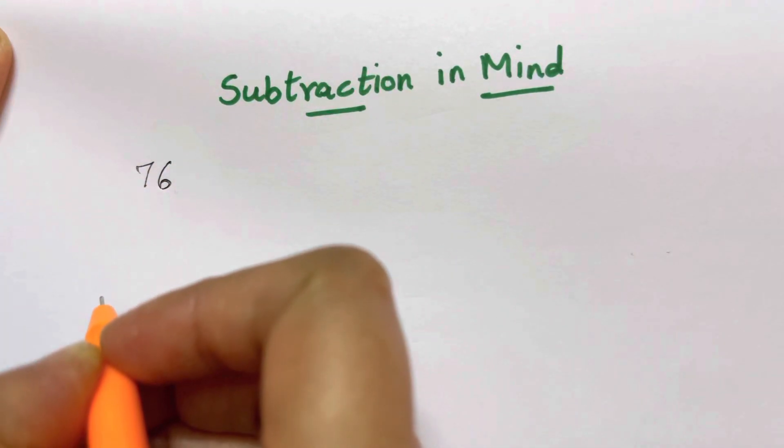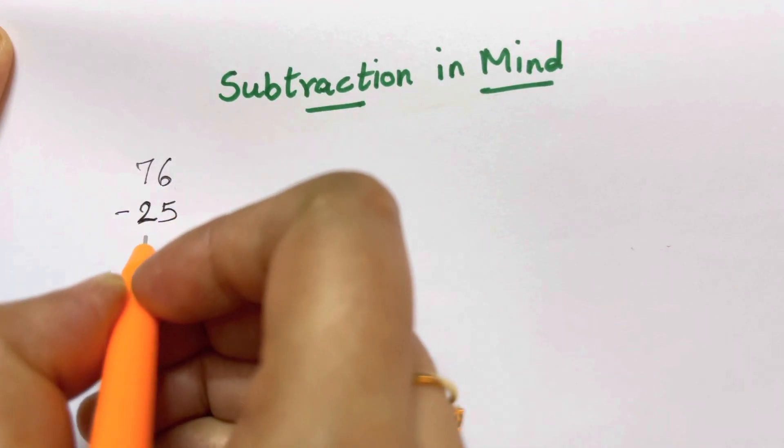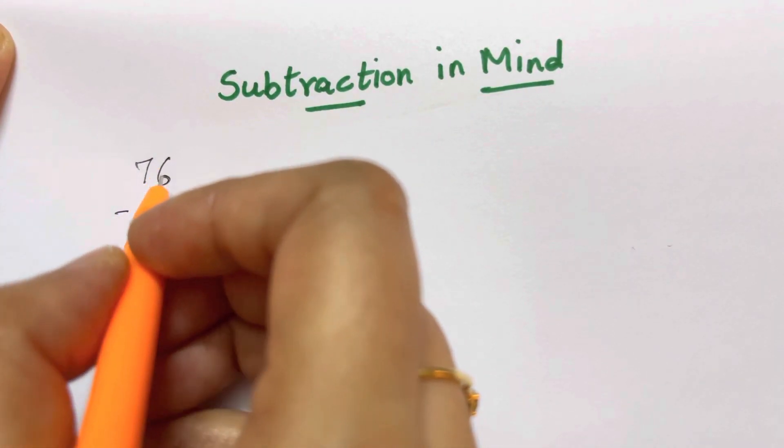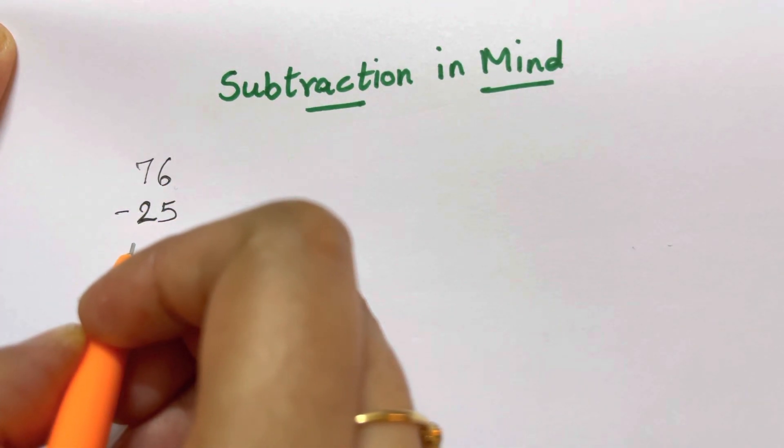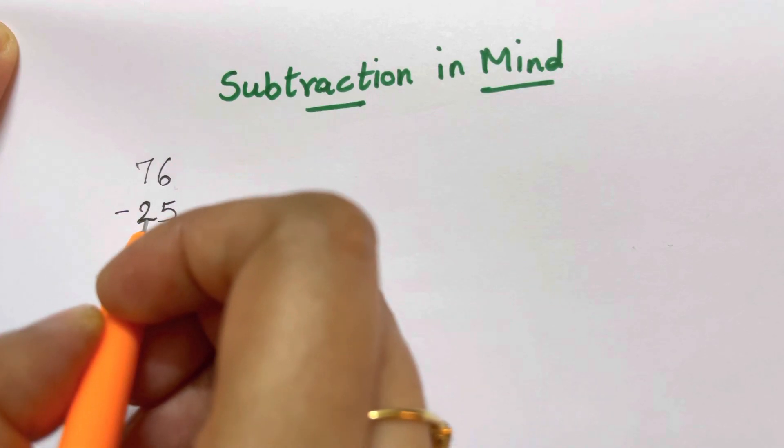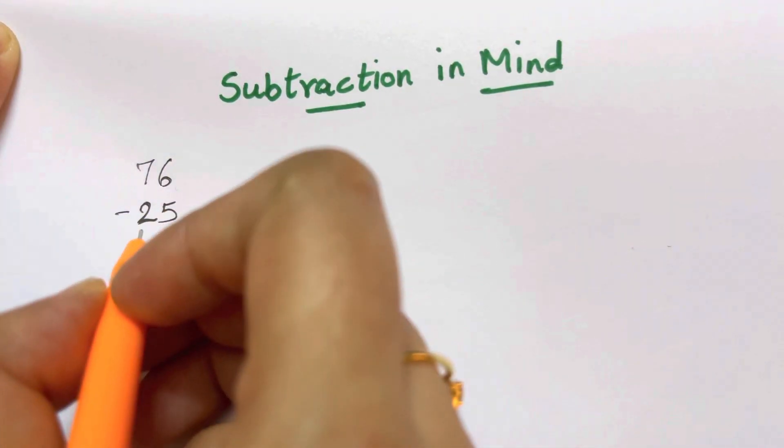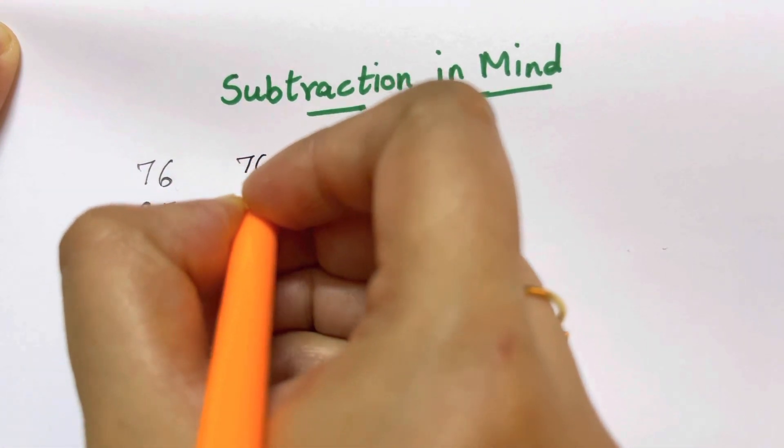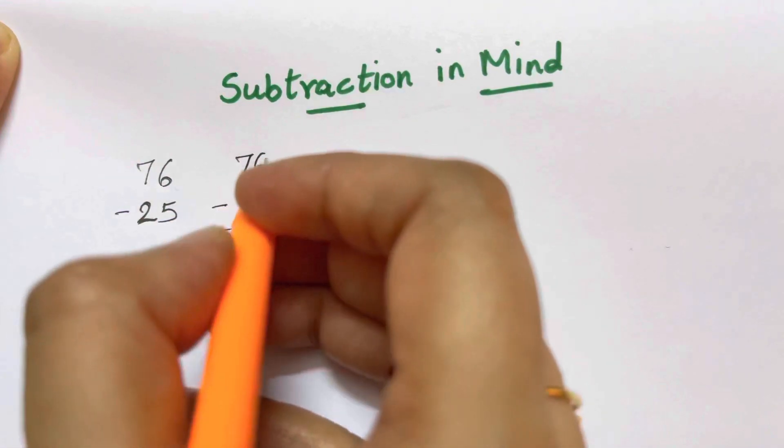Let me give you some example how you will do subtraction easily. Like if you have 76 minus 25, how are you going to do it in mind? Usually you do 6 minus 5, that's 1 and then 7 minus 2, that's 5 and you'll get the answer as 51. But now what we are going to do is round off and subtract from 20.